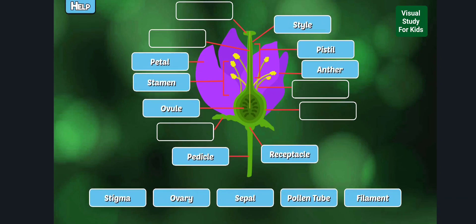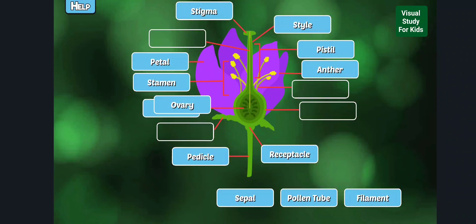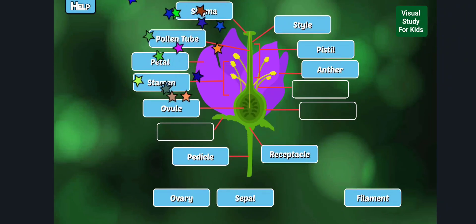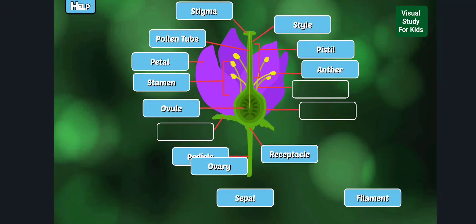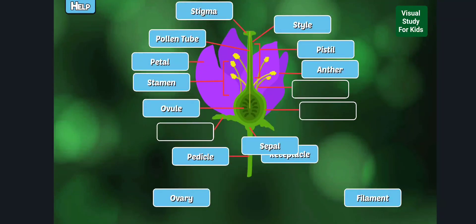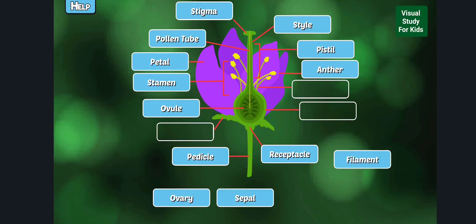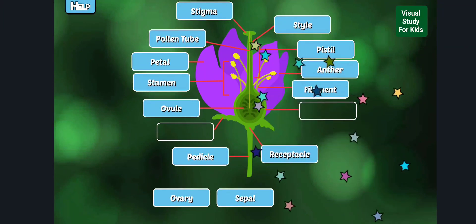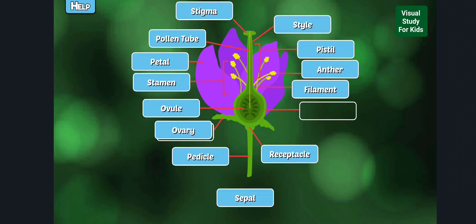Label the missing parts of the flower. Stigma: The stigma is the sticky knob at the top of the pistil. Ovary. Sepal. Pollen tube: A pollen tube is formed by a pollen grain as it grows down the style. Ovary. Sepal. Filament: The filament holds the anther up. Ovary.